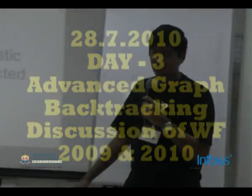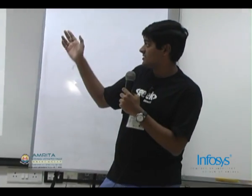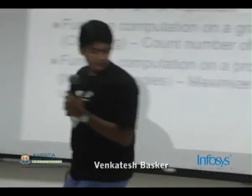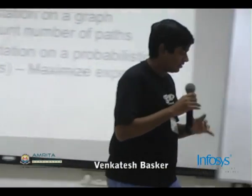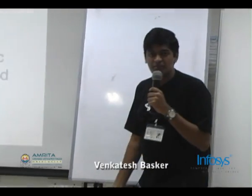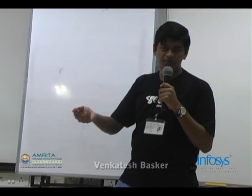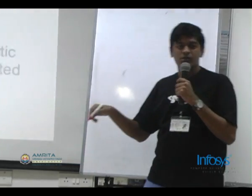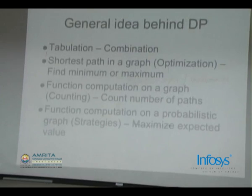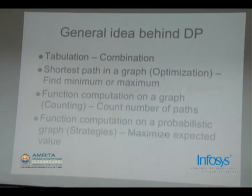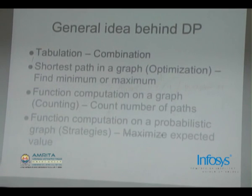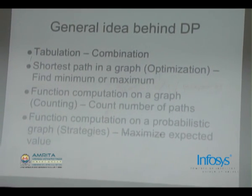Dynamic programming can basically be classified into four ways. The first is tabulation. A classic example of tabulation in dynamic programming is combination. So what does combination mean? Suppose you want to compute n choose r. The recurrence for n choose r is: n choose r equals n minus 1 choose r minus 1 plus n minus 1 choose r.